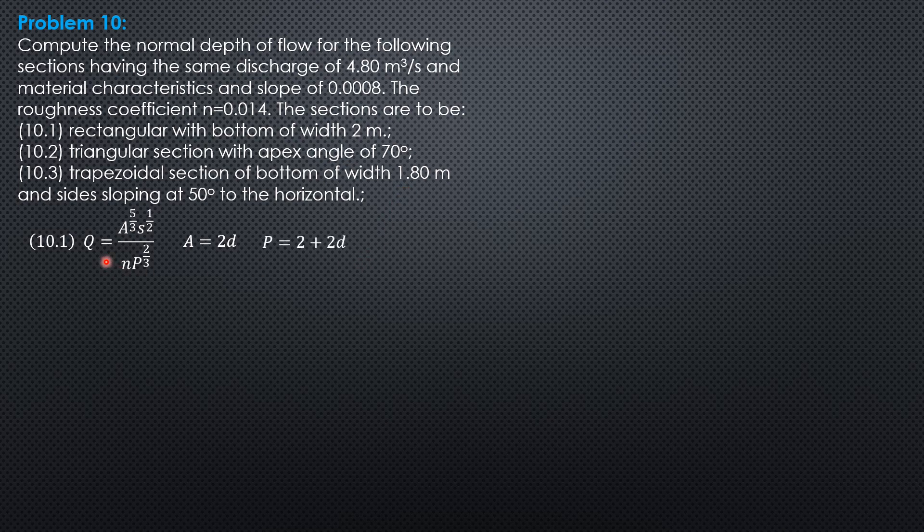Substitute into this equation: 4.8 equals 2D to the 5 thirds times 0.0008 to the 1 half over 0.014 times 2 plus 2D to the 2 thirds. Simplifying: 4.8 times 0.014 times 2 to the 2 thirds divided by 2 to the 5 thirds divided by 0.008 to the 1 half. What is left in the numerator is D to the 5 thirds, in the denominator 1 plus D to the 2 thirds.